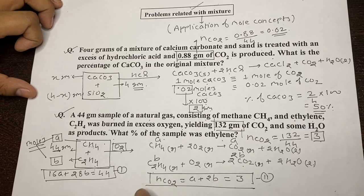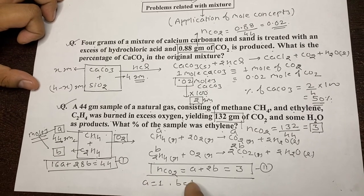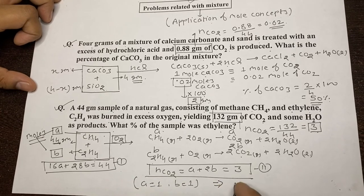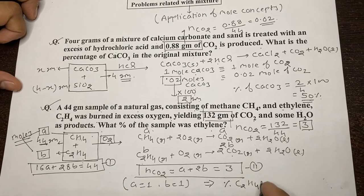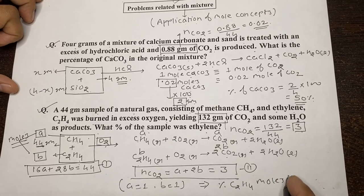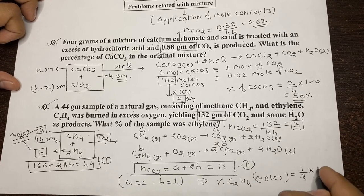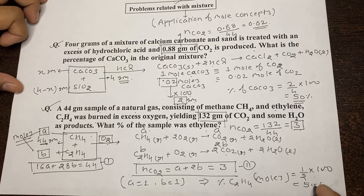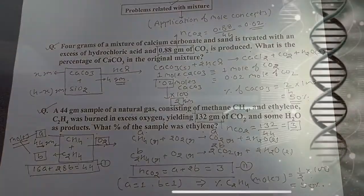Solving equation one and equation two gives A = 1 and B = 1. So the percentage of ethylene by moles is B/(A + B) × 100 = 1/2 × 100 = 50%.